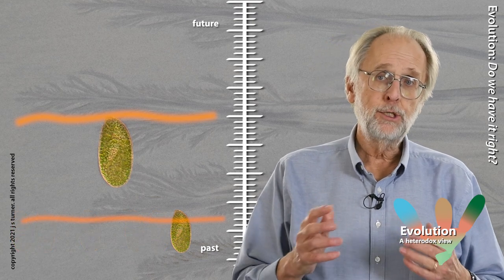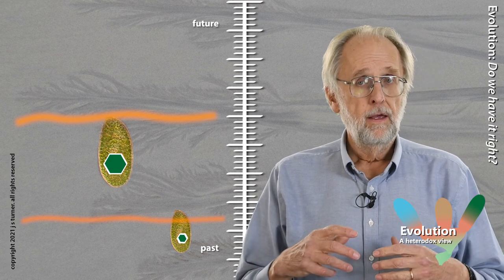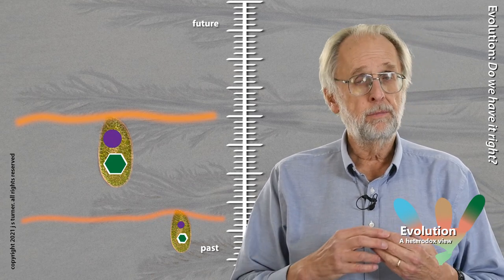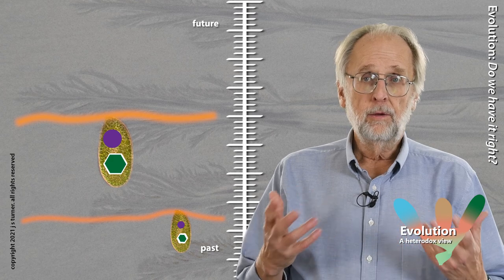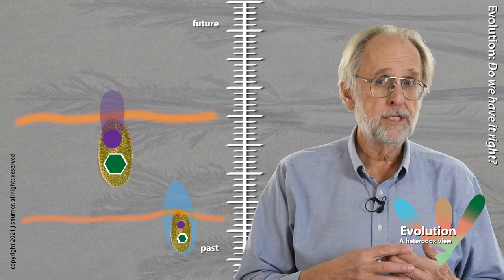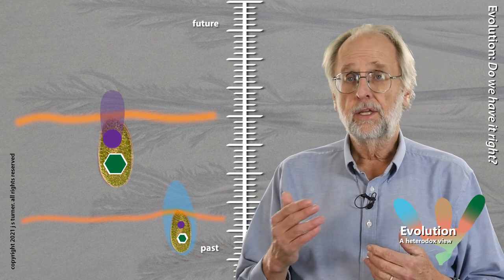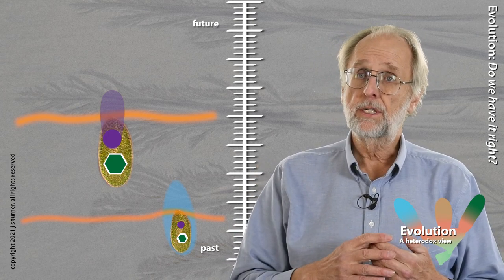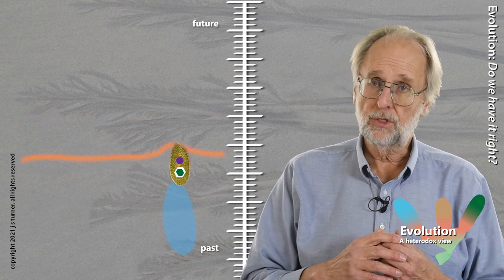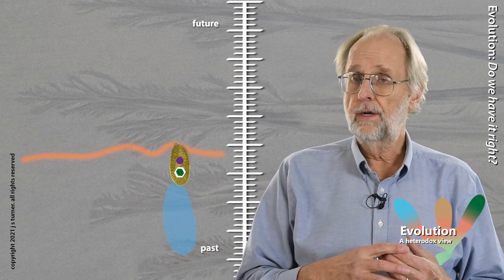Each paramecium contains within it a complement of hard inheritance, represented by this green hexagon. As the paramecium restructures its environment, this modifies the epigenome, represented by this purple circle. The modified environment also forms a memory that extends forward in time, and how far forward depends upon how persistent the modification is. If it's sufficiently persistent, this forward memory will persist when the present generation of paramecium dies, and the subsequent generation now lives in this restructured environment, inherited from its predecessor. This includes the variants within the population.